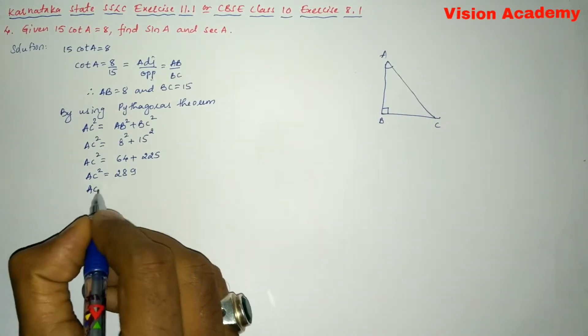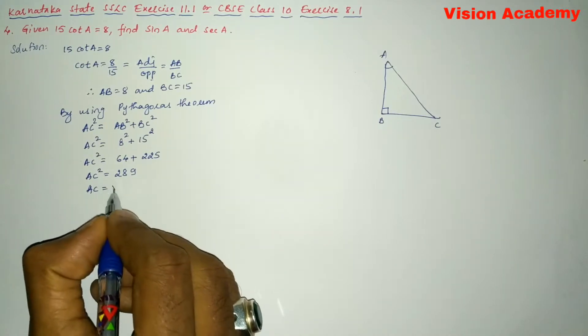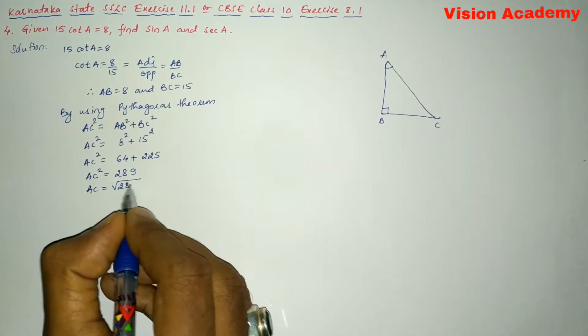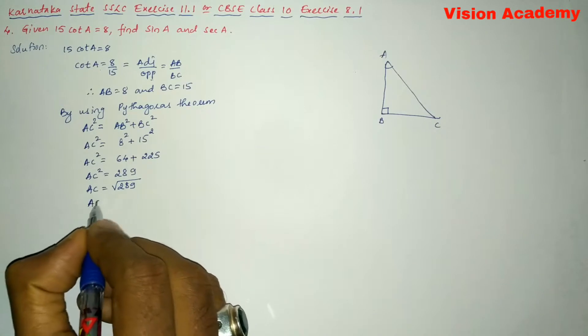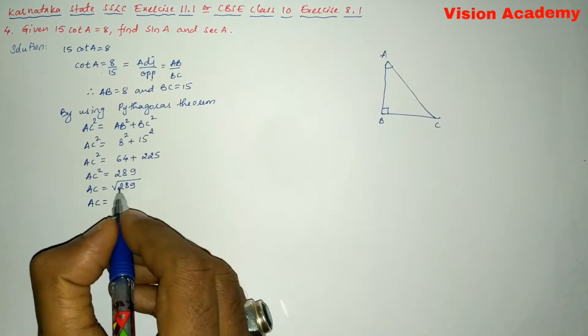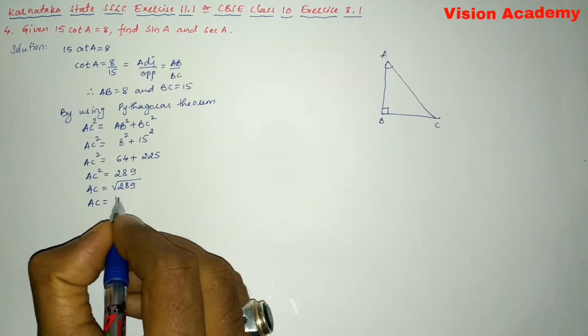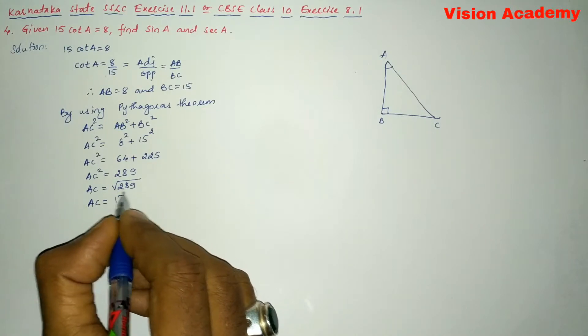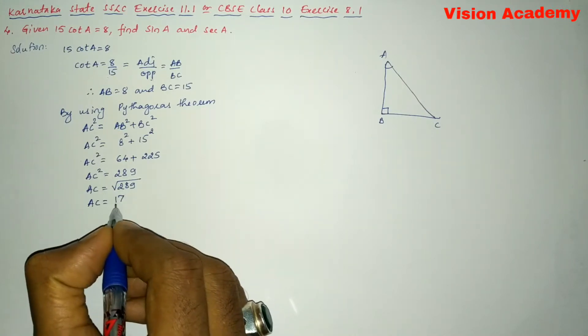Now let us transform this square from LHS to RHS. Now it will become square root of 289. So here we can write AC equals... 289 is a perfect square of 17. Once we bring out this 289 from the square root, we are going to get 17.